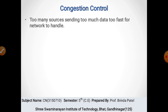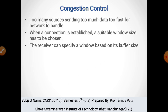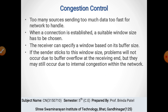Too many sources sending too much data too fast for the network to handle — at that time a congestion problem will occur. When a connection is established, a suitable window size has to be chosen to avoid congestion. The receiver provides a window size based on its buffer size. If the sender sticks to this window size, overflow problems at the receiving end will not occur, but congestion may still occur internally within the network.